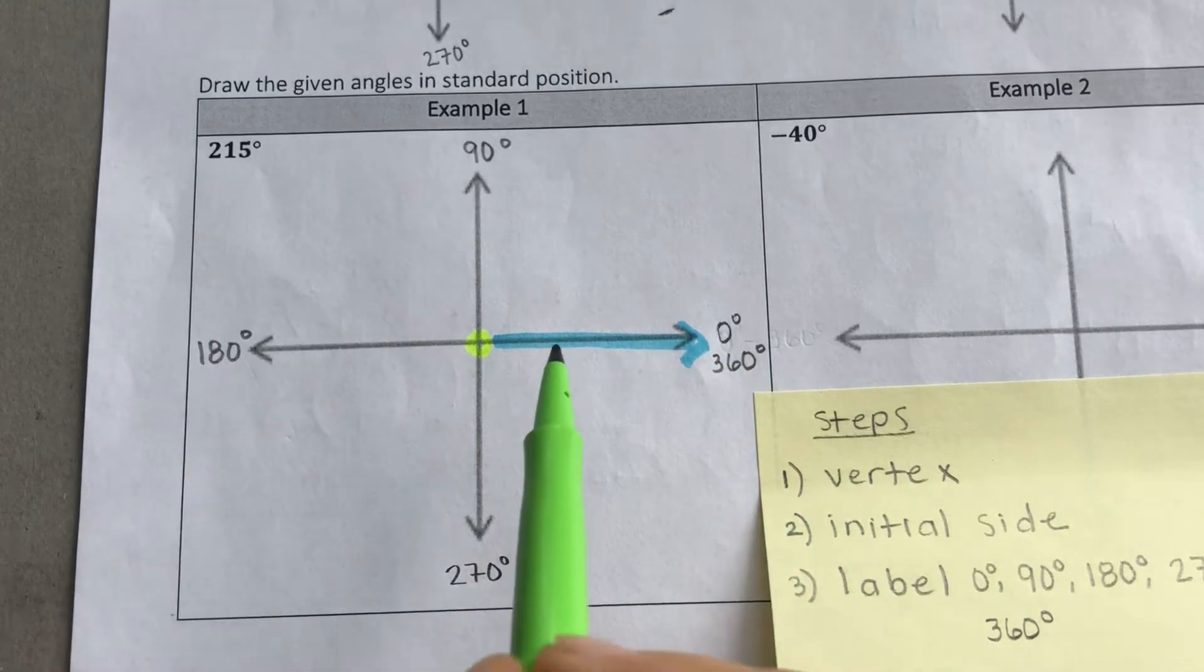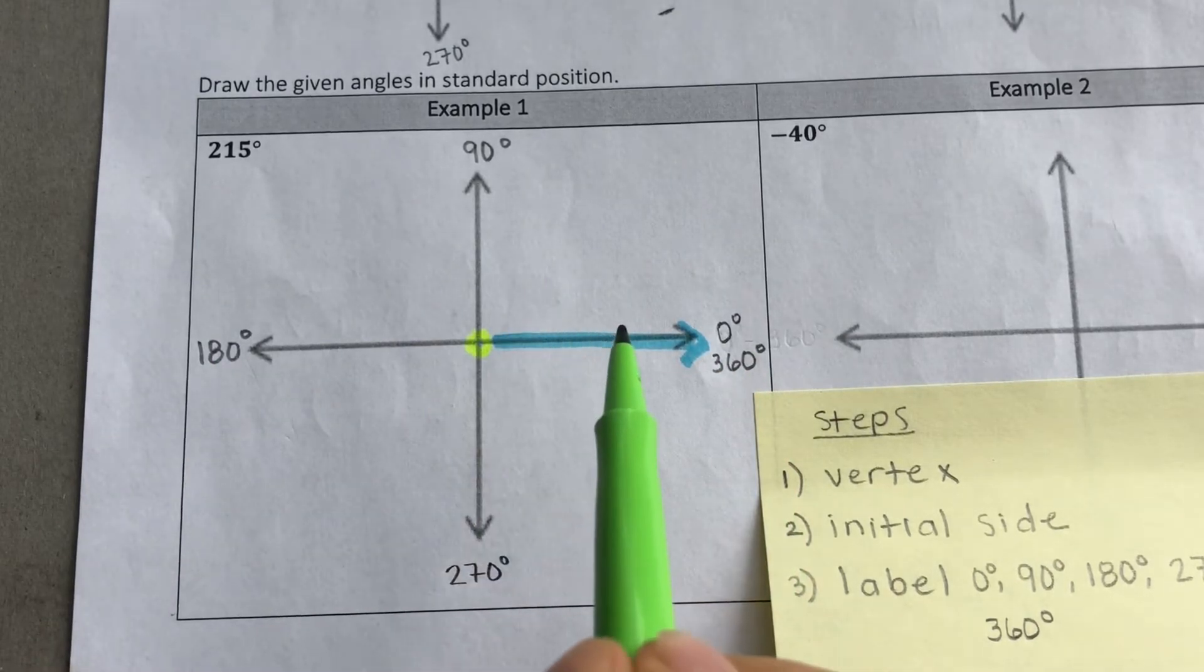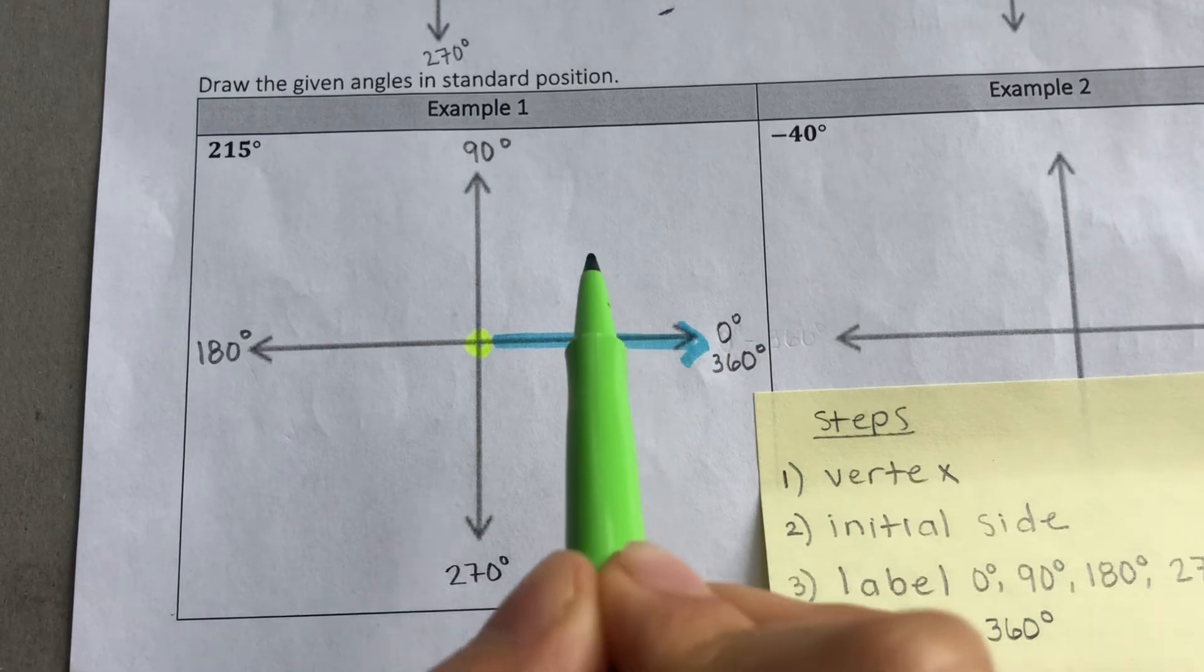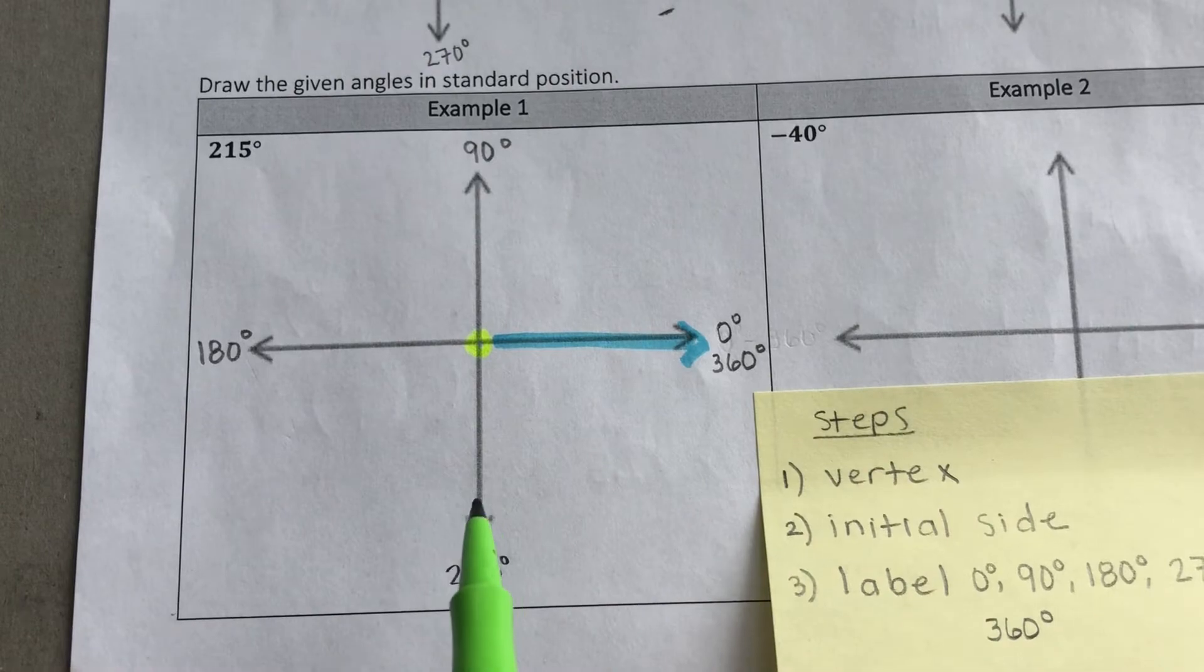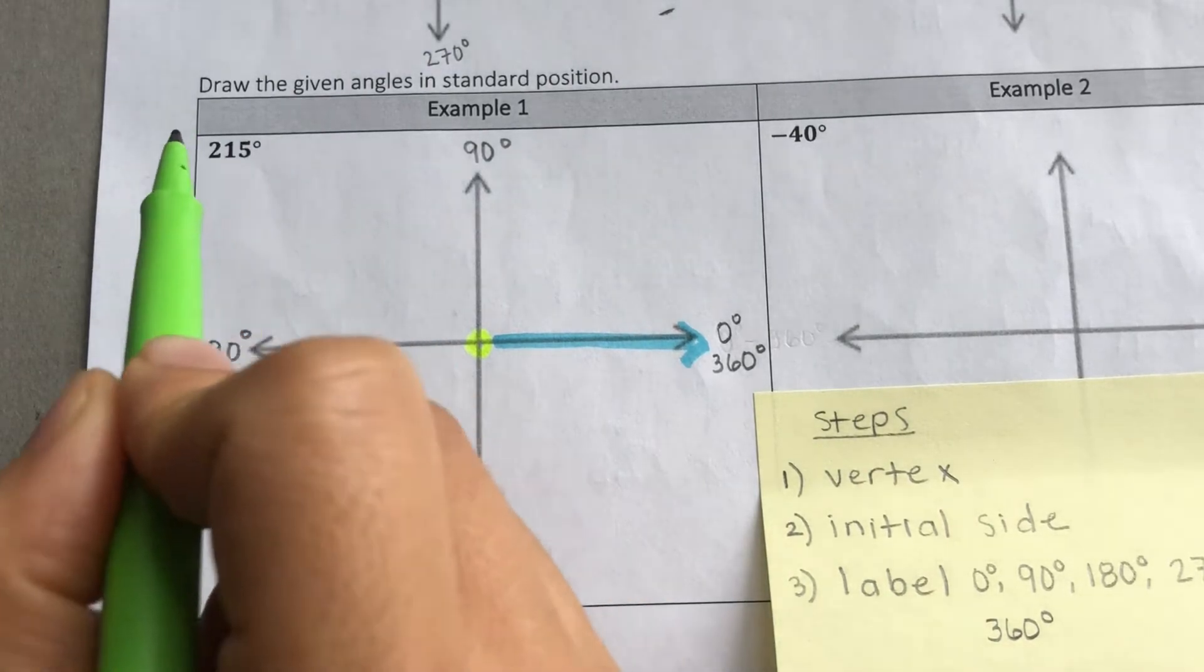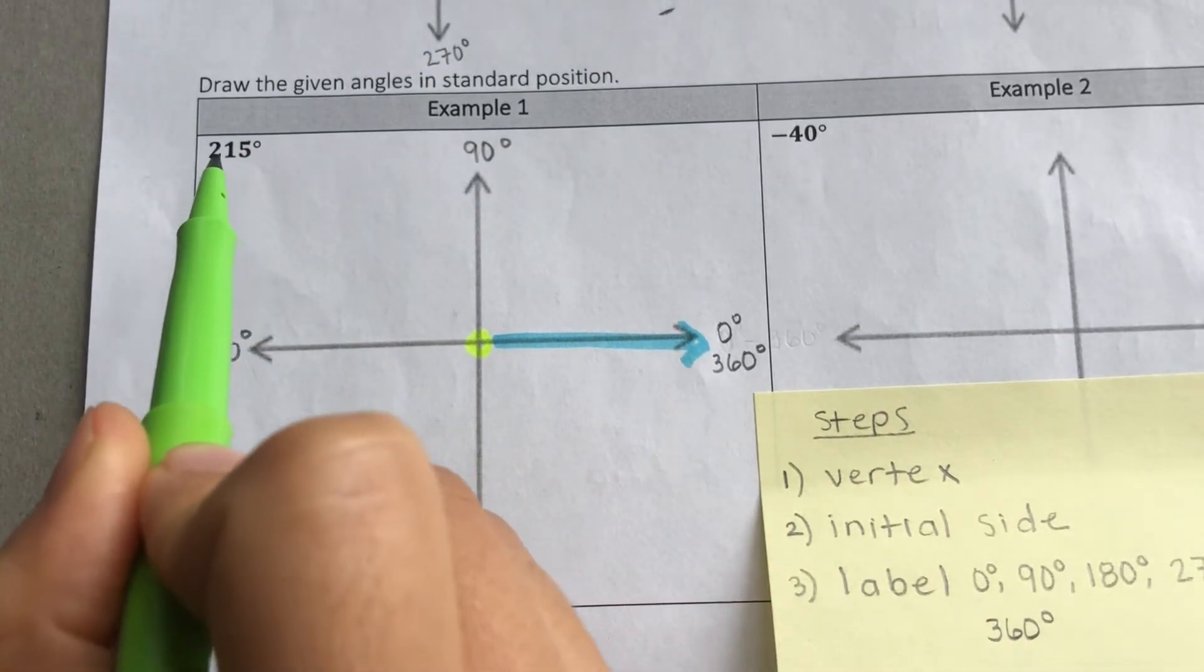Okay, next step, we need to determine are we going to start rotating upwards toward the left or downwards. It all depends on whether we have a positive or a negative angle.